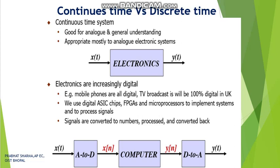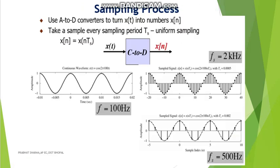As we all know, the computer understands only digital signals, so we have to convert analog signals into digital signals. At the receiving end, we again convert the digital signal back into an analog signal. Sampling is a method to convert an analog signal into a discrete signal, and then we convert the discrete signal into a digital signal by the process of quantization.